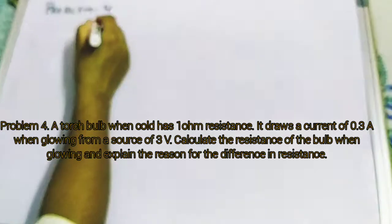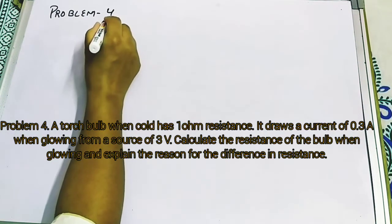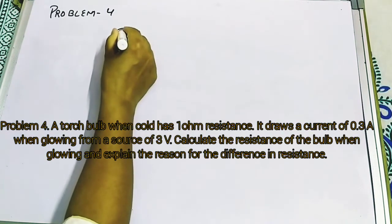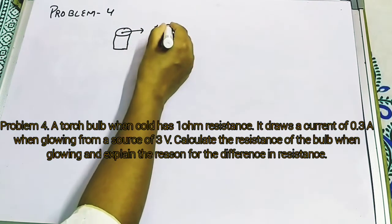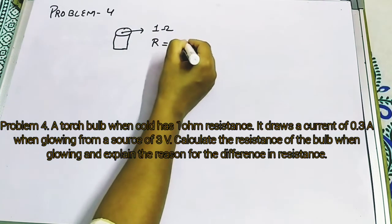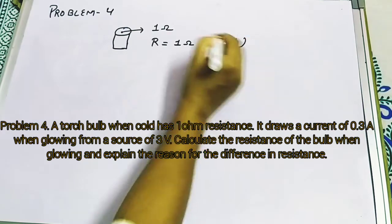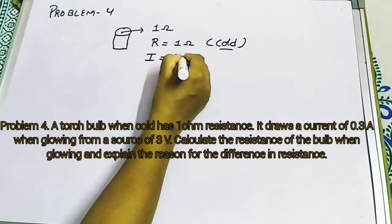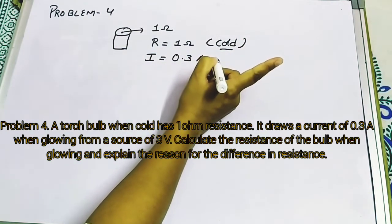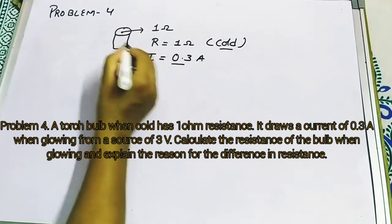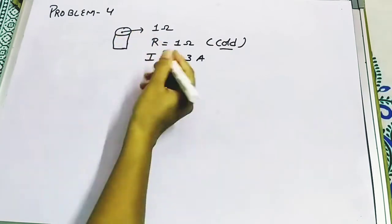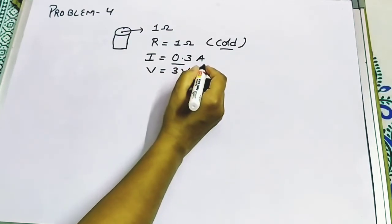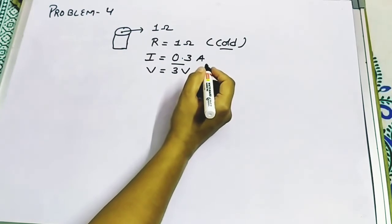Problem 4: A torch bulb when cold has a resistance of 1 Ohm. It draws a current of 0.3 amperes when glowing from the source, and the EMF or potential is 3 volt. Calculate the resistance of the bulb when glowing and explain the reason for the difference in resistance. When the bulb is glowing its temperature becomes hot; when it is off, the bulb is cold.